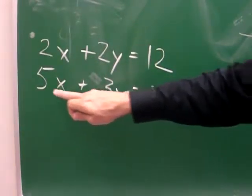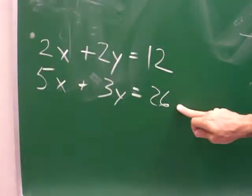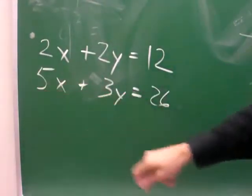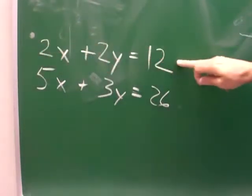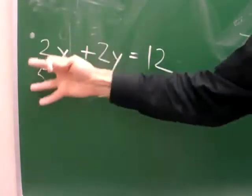So if I multiply all of the bottom one by 2, this would become 10. And multiply all of this by 5, this will become 10 and we can get rid of it. But that seems like large numbers.